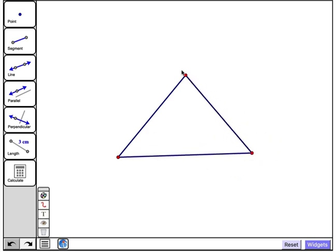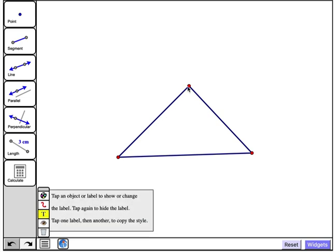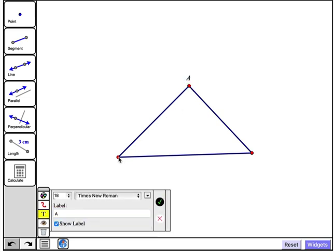So here is my triangle, and I'd like to compute its area, so I'm going to construct an altitude of the triangle. First however, let's use the label widget to name the vertices. I'll tap each one, A, B, and C.